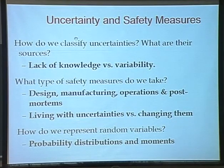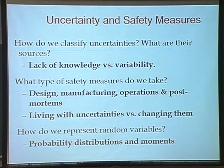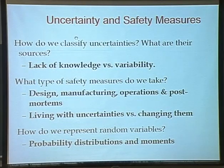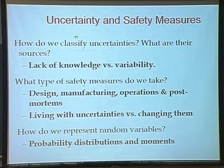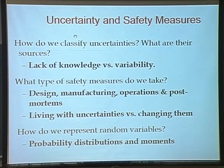In terms of uncertainty, we are going to look at the fact that uncertainty comes mostly in two flavors: one is due to lack of knowledge, and one due to variability. Also, the safety measures that we take can happen in a lot of places. Most people think of safety measures done during design, but there are safety measures taken in manufacturing, operation, and even post-mortems.